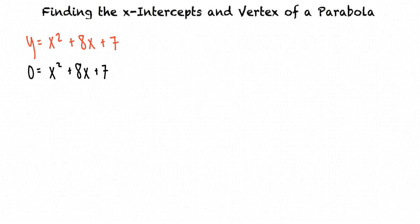That would be 1 and 7, because 1 times 7 is 7, and 1 plus 7 is 8. Exactly. This means our two factors are x plus 7 and x plus 1.